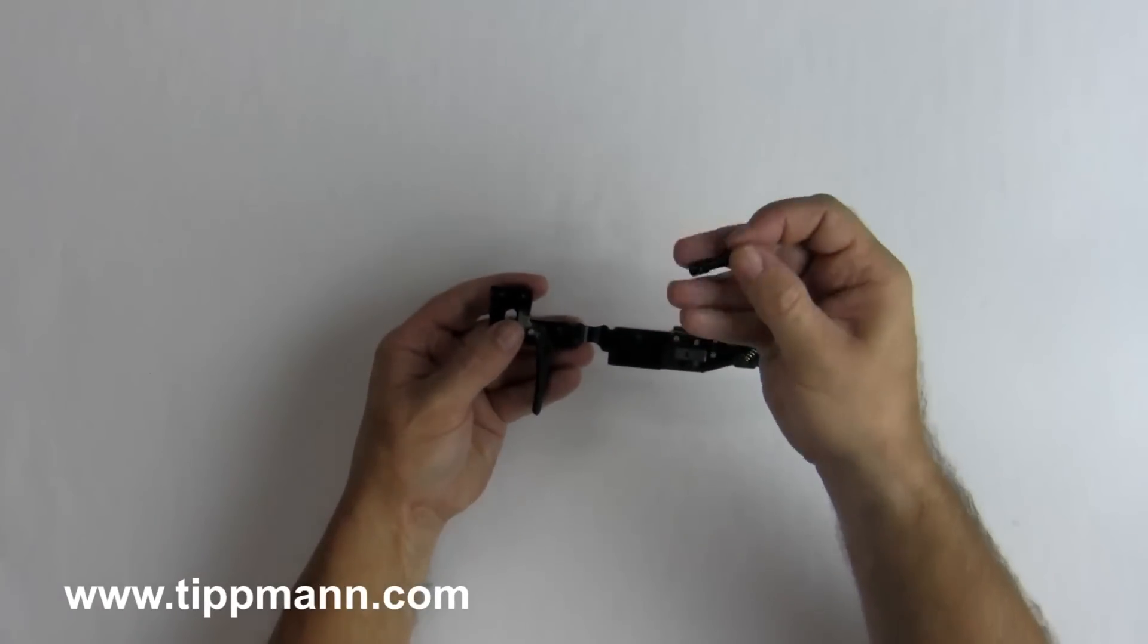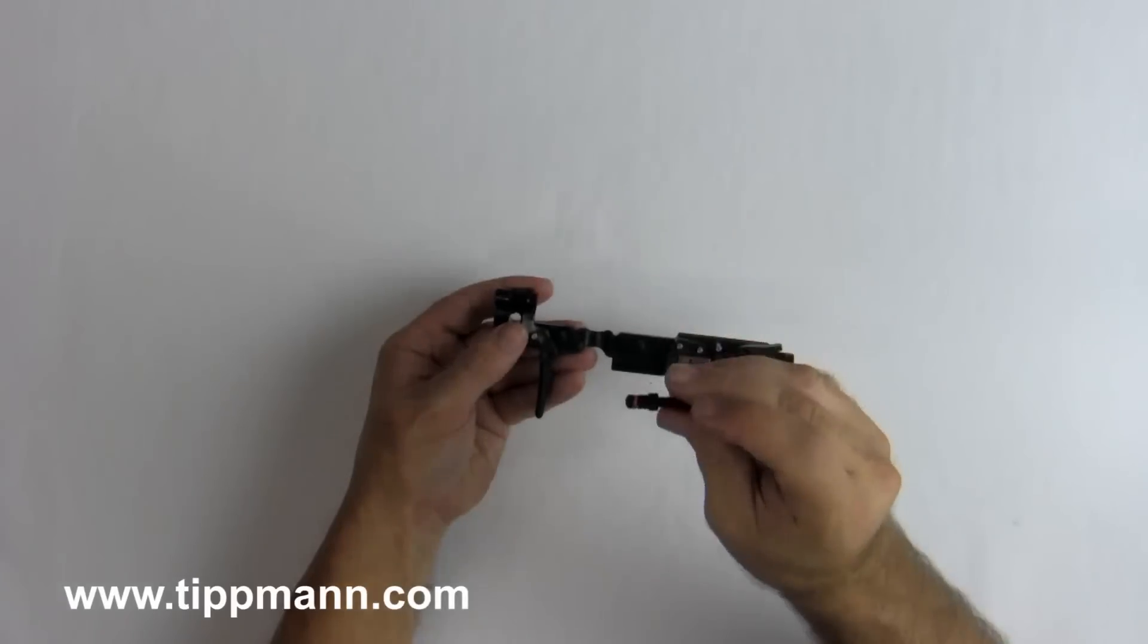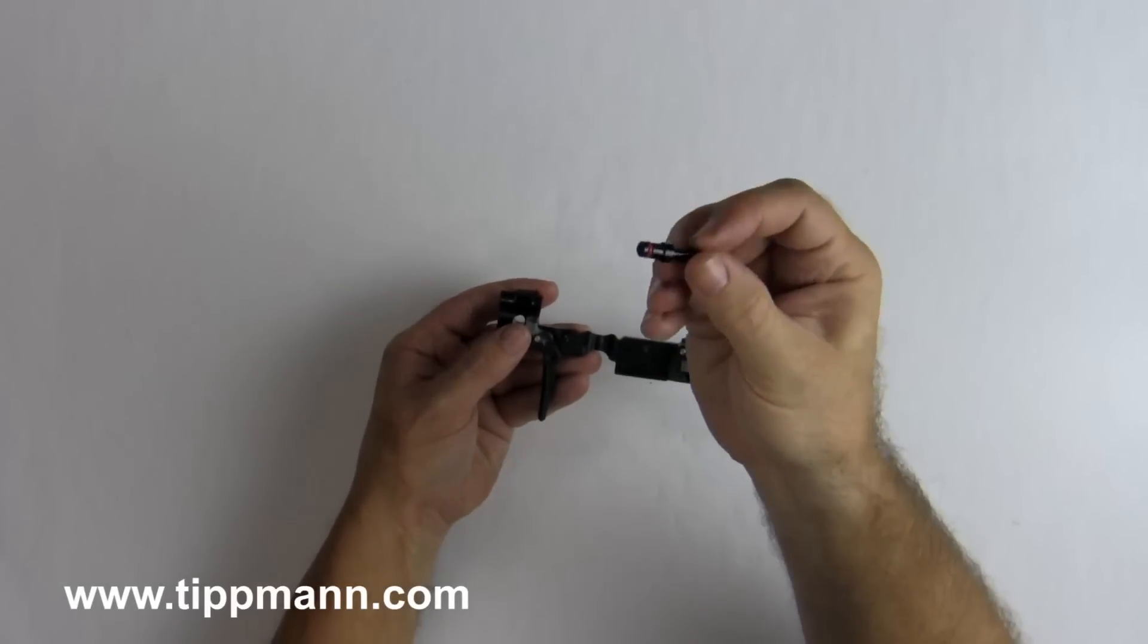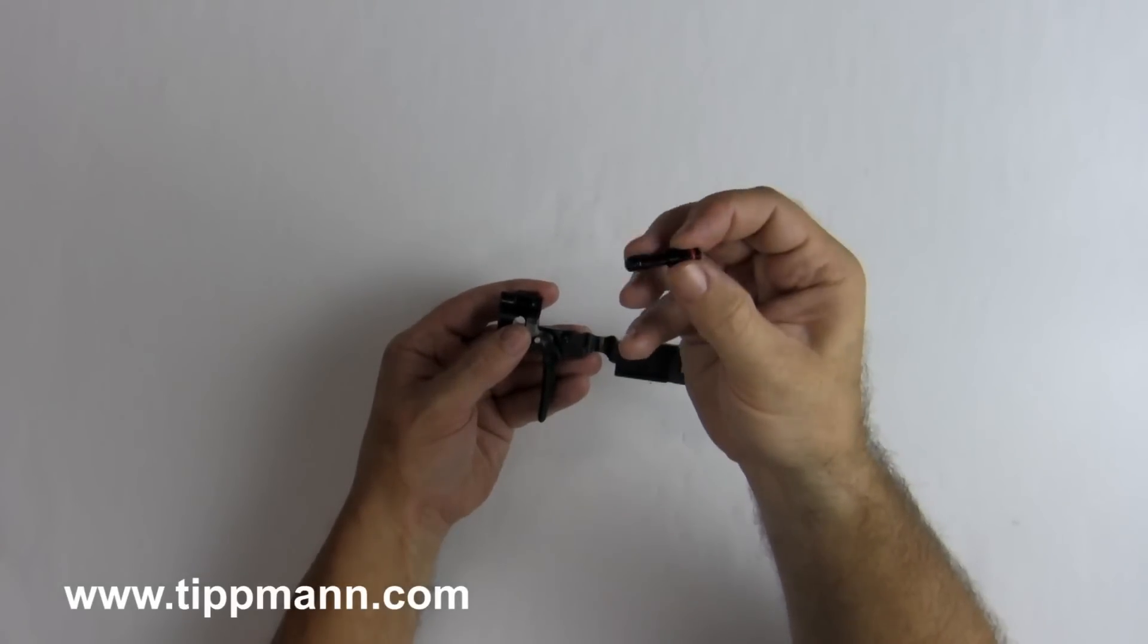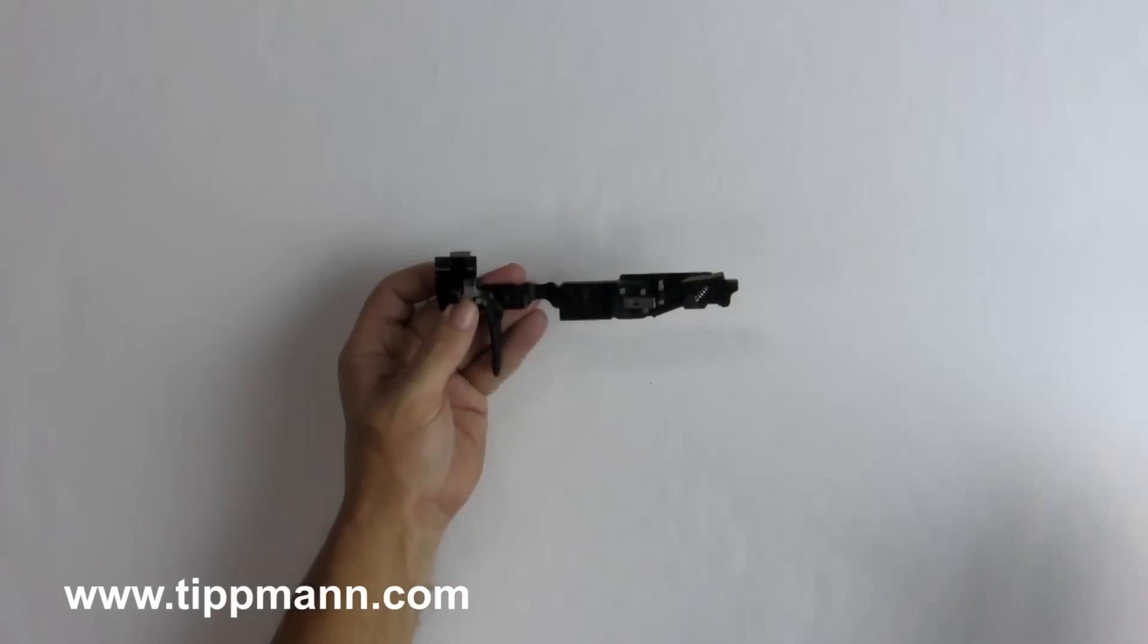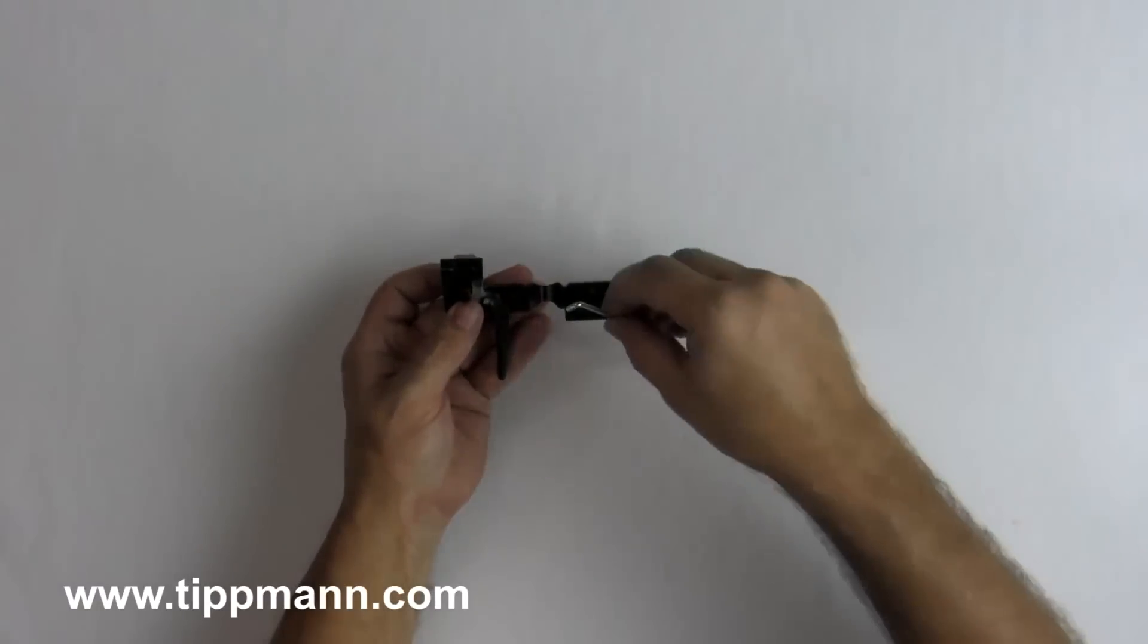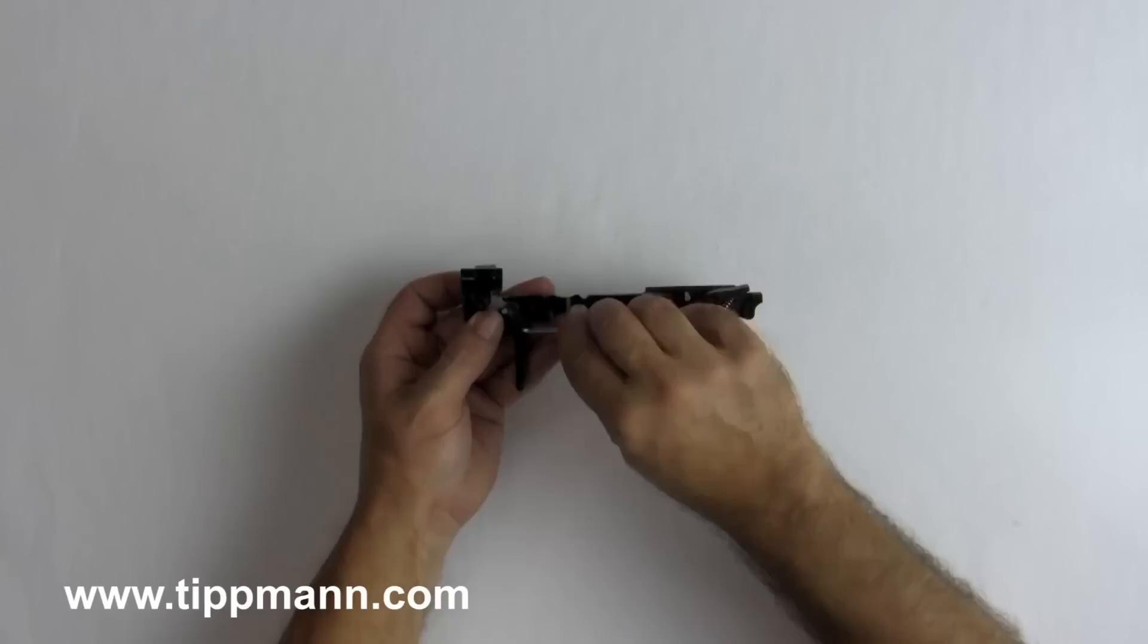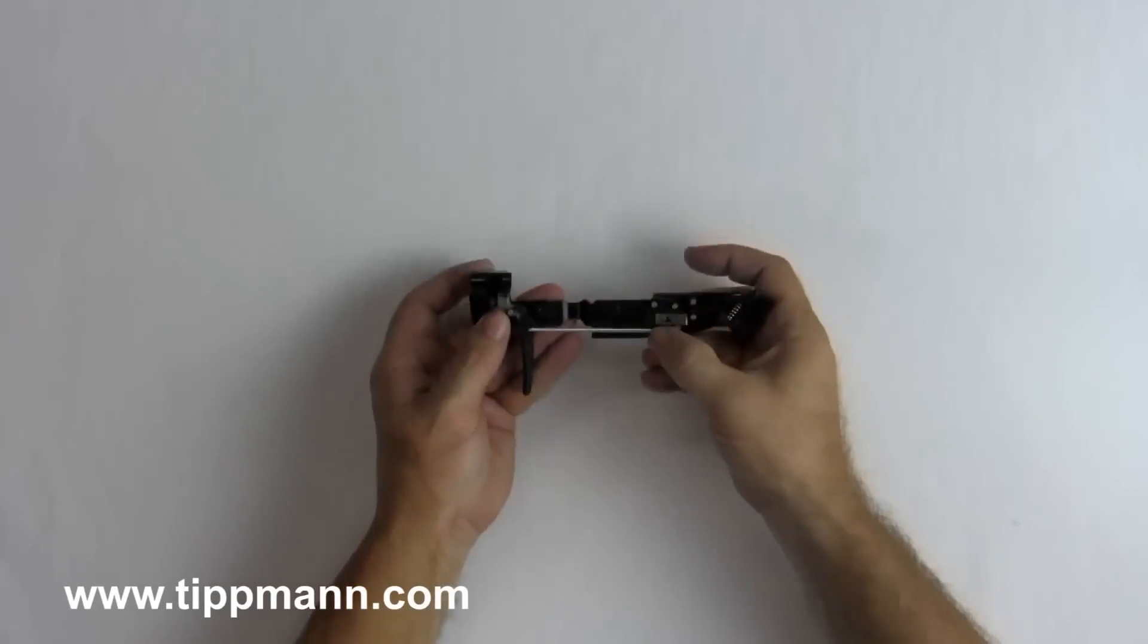And go ahead and put the safety back in. You'll notice there's a red O-ring and a black O-ring. You want to go black O-ring down. Put the linkage arm back on.